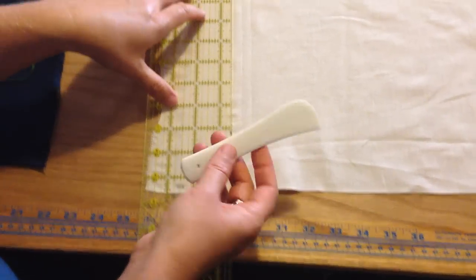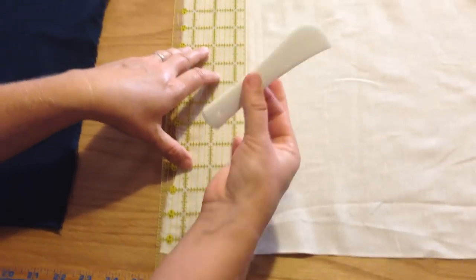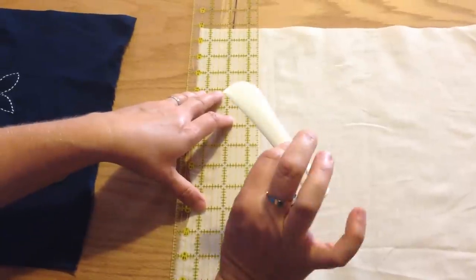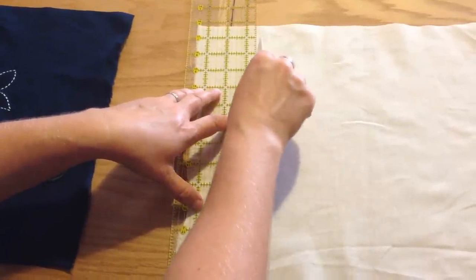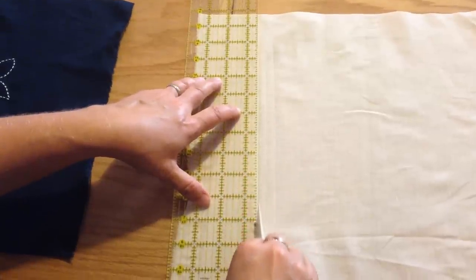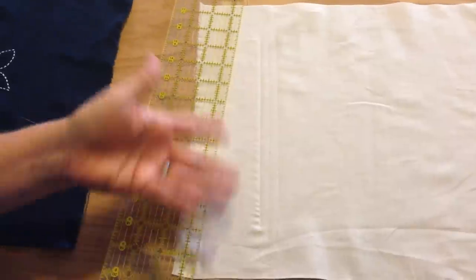So what I'm doing here is leaving a mark without actually marking the fabric. We're using a Japanese Hera, which is a little plastic tool that will leave a nice dent in the fabric, but just a dent.